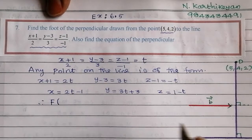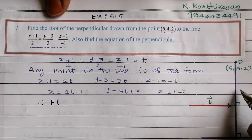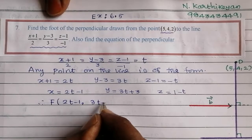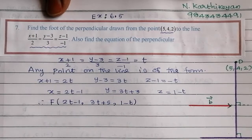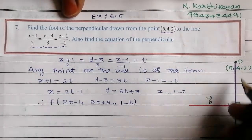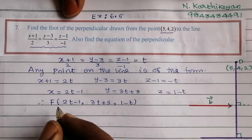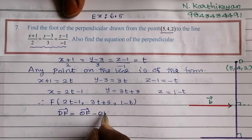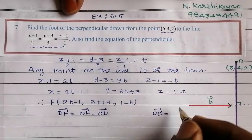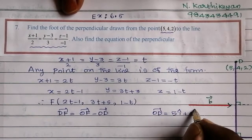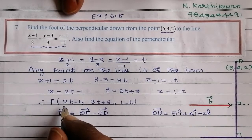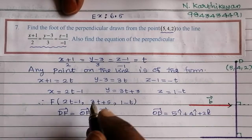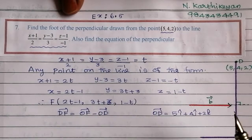Therefore, any point F on the line is of the form F = (2t−1, 3t+3, 1−t). We now find the vector DF, where DF = OF vector minus OD vector. OD vector is 5i + 4j + 2k, and OF vector is (2t−1)i + (3t+3)j + (1−t)k.